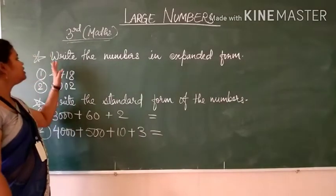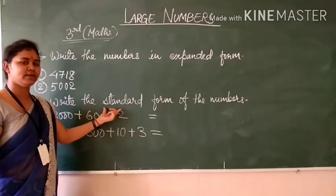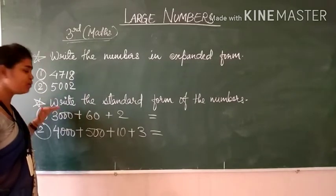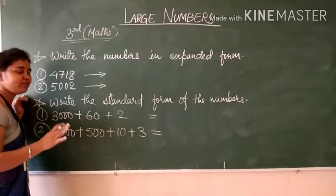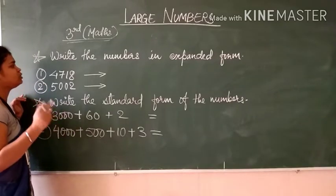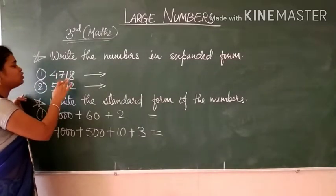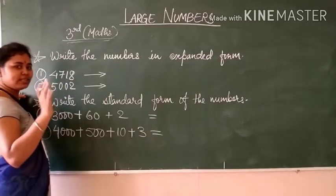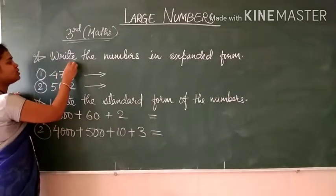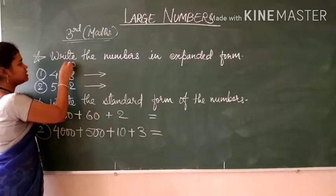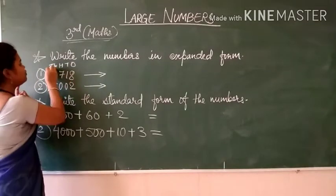Students, now we are going to learn how to write numbers in the expanded form and how to write numbers in the standard form. These two are opposite to each other. In the expanded form, as I told you in the previous class, you can expand the number very easily. First you should know which number it is and how to read it. For that, first write the places of the number: ones, tens, hundreds, and thousands. Here you can see 4 places and 4 digits.